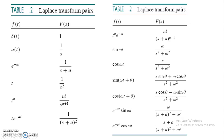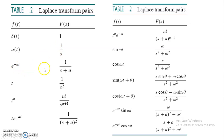These are the different pairs of the Laplace transform. When the function is f of t, its Laplace transform will be f of s. The impulse function delta of t has a transform value of 1. The unit function has a transform of 1 over s. e raised to minus at will be 1 over s plus a. We have to keep these pairs in mind for doing our numericals going forward.